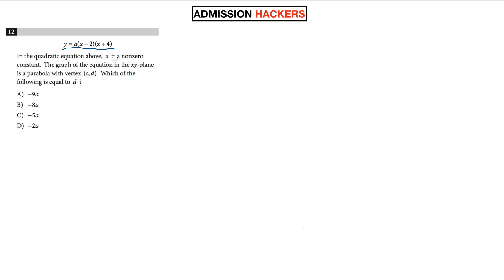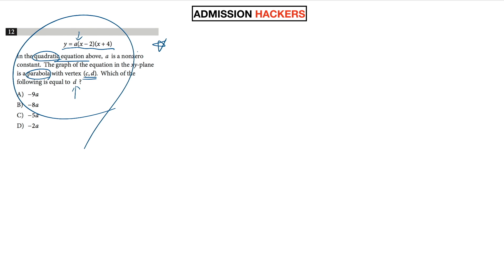The next question says: there's this equation, and in the quadratic equation above, a is a non-zero constant. The graph of the equation in the xy-plane is a parabola with vertex (c, d). Which of the following is equal to d? So this one is a lot tougher than the previous one. There are so many letters and weird words like non-zero constant, and a, c, and d is the vertex — what the heck is this? But again, if you are confused, rather than rereading the question, just visualize — draw out what the question says.